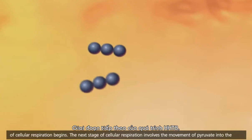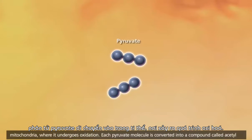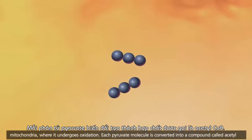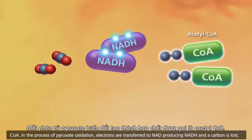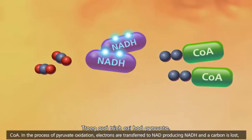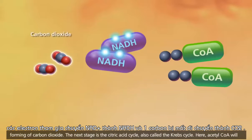The next stage of cellular respiration involves the movement of pyruvate into the mitochondria, where it undergoes oxidation. Each pyruvate molecule is converted into a compound called acetyl-CoA. In the process of pyruvate oxidation, electrons are transferred to NAD+, producing NADH, and a carbon is lost, forming carbon dioxide.